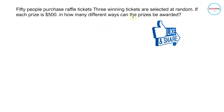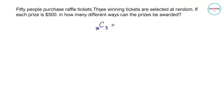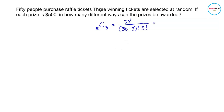Since the order does not matter, this problem involves combinations. We use the combination formula with 50 people and 3 winning tickets: C(50, 3) = 50! / ((50 - 3)! × 3!) = 50! / (47! × 3!).